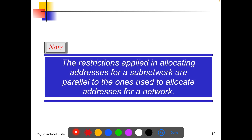The restrictions applied in allocating addresses for a subnetwork are parallel to those used to allocate addresses for a foreign network. Whatever restrictions apply to the network also apply to the subnetwork in classless addressing.